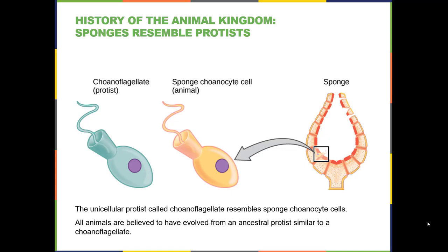The history of the animal kingdom goes back to what we believe is a protist ancestor. One protist that resembles what that ancestor might have looked like is the choanocyte — the collar cell from the sponge — with a nucleus and flagellum. The ancestor of the animal kingdom was probably very similar to what we call a choanoflagellate, a unicellular protist. We believe all animals evolved from protists similar to the choanoflagellate.